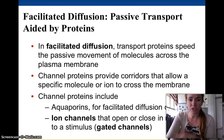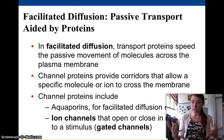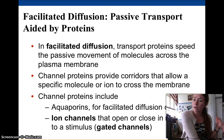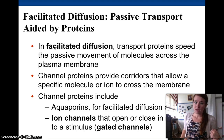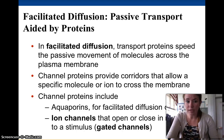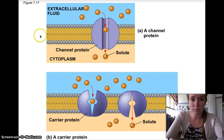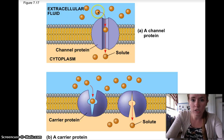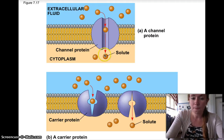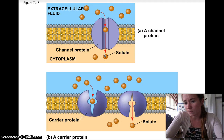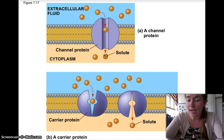There are two kinds. There are channel proteins, which are proteins that literally have a big hole right through the middle that molecules can move across. They provide these hydrophilic corridors, so anything that's hydrophilic can move through them, and they allow a specific molecule or ion to cross the membrane. Here we have a channel protein — this is extracellular outside of the cell, this is the cytoplasm inside. The orange solute is in high concentration out here and low concentration in here, so it moves down its concentration gradient through the channel protein and into the cell.